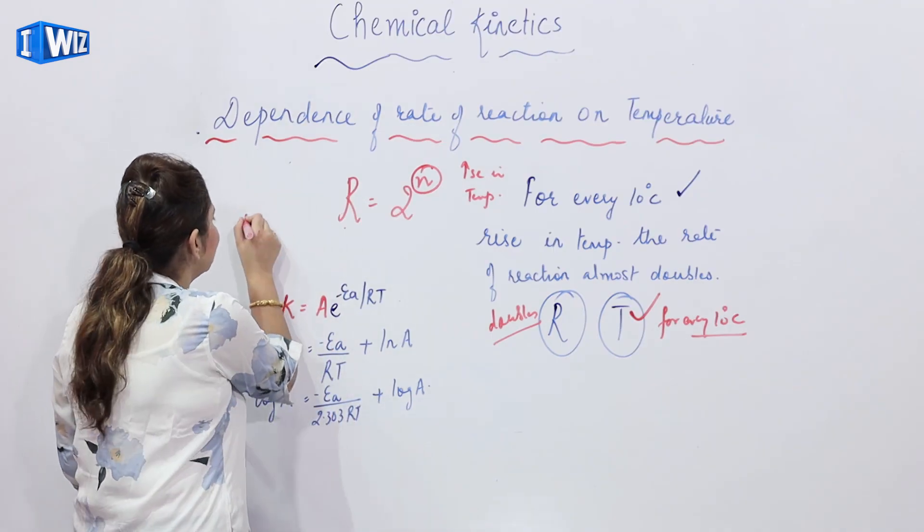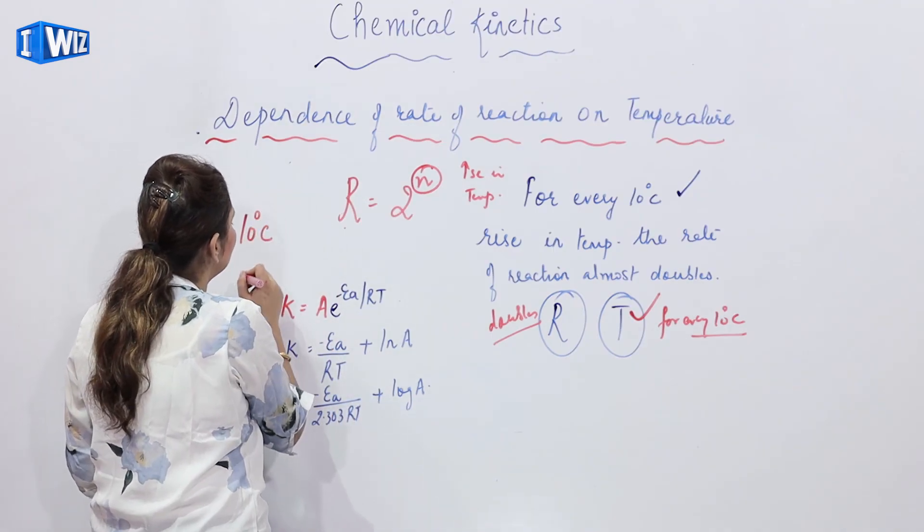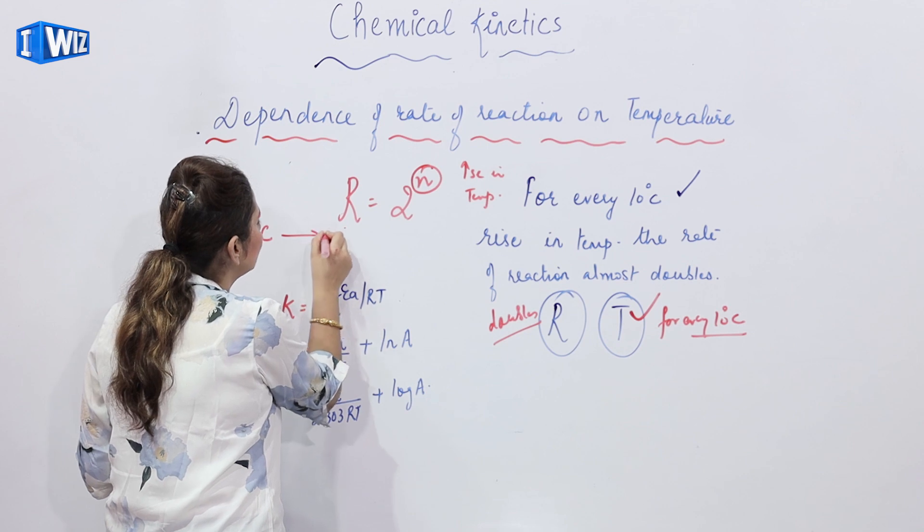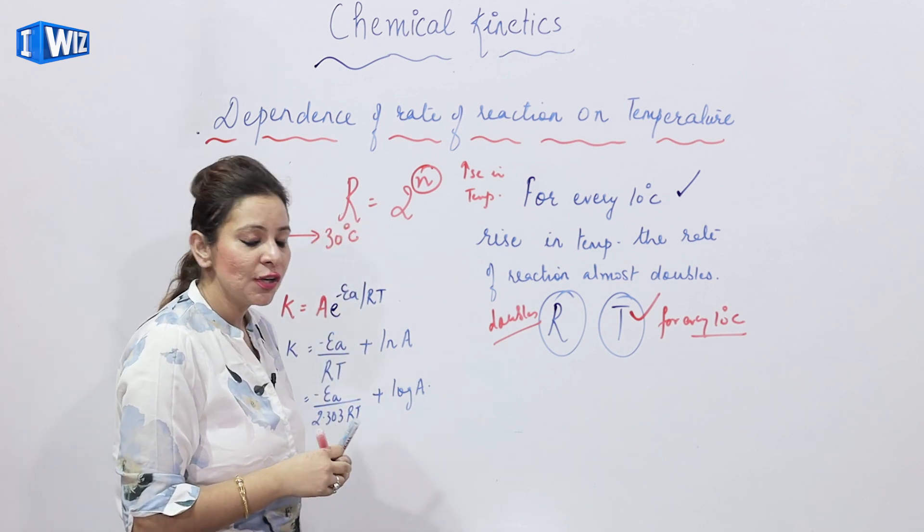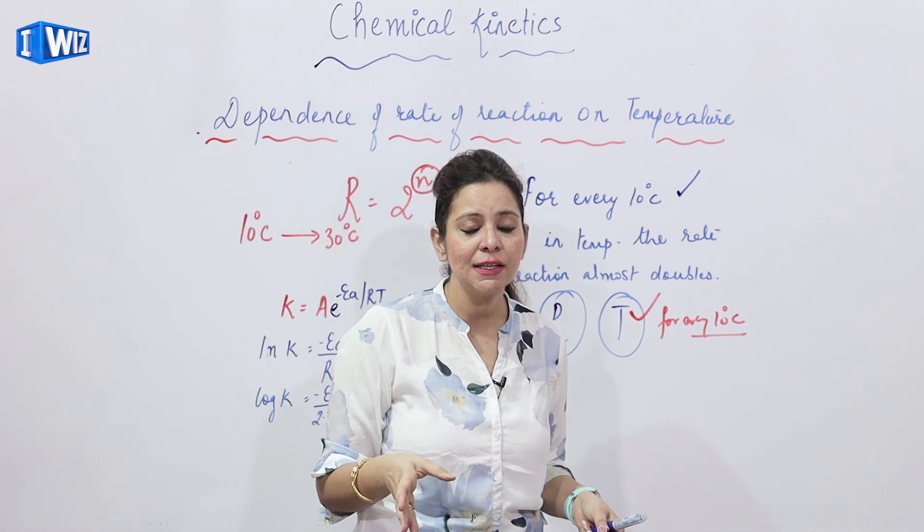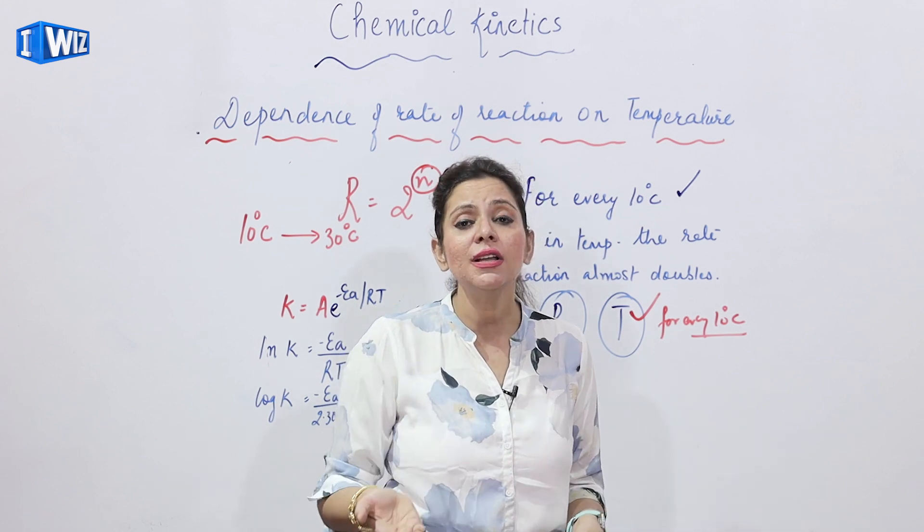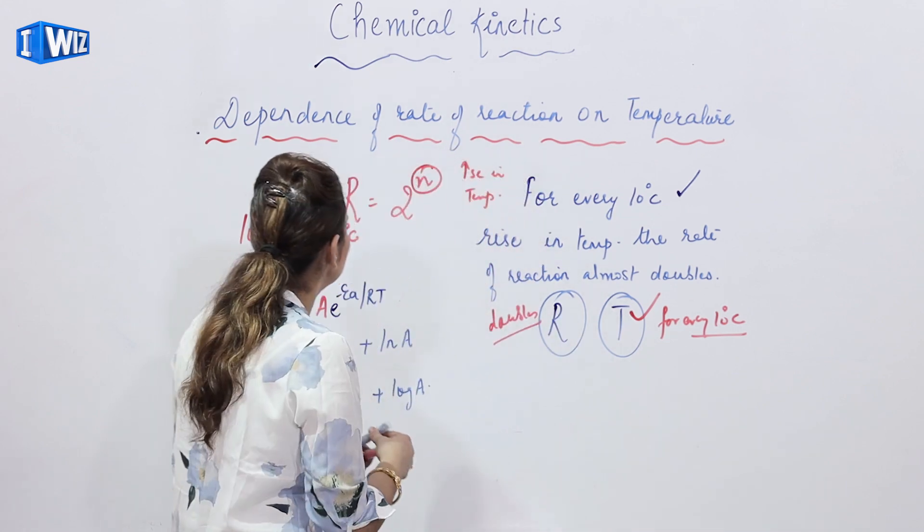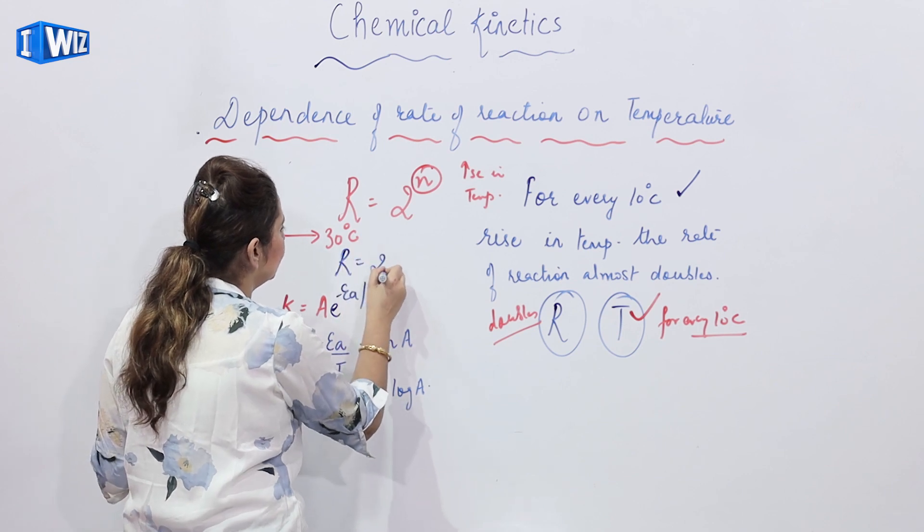For example, if I say that the temperature increases from 10 to 30 degree Celsius and you get a question that how the rate is affected, you need to put directly into this formula R is equal to 2.